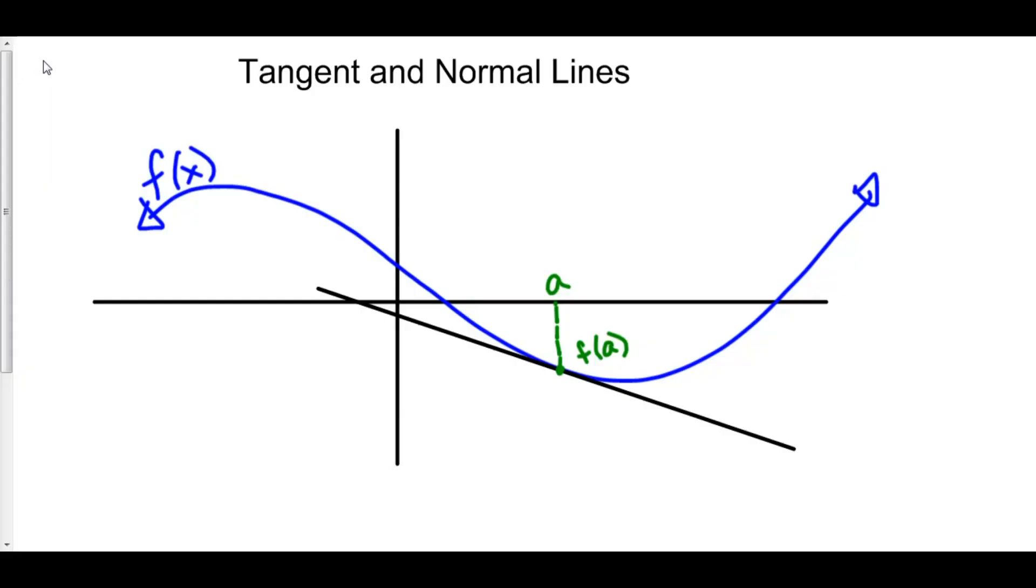How do you find the equation of a tangent line or a normal line just by looking at the function itself? Well, it turns out that to find the equation of a tangent line, you need just a line. And to find the equation of a line, you need a point and you need a slope.